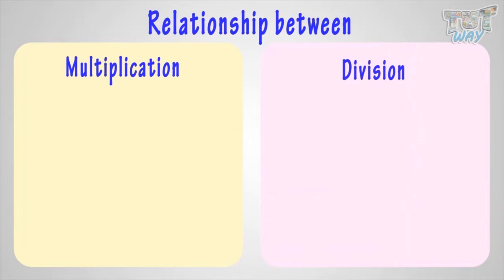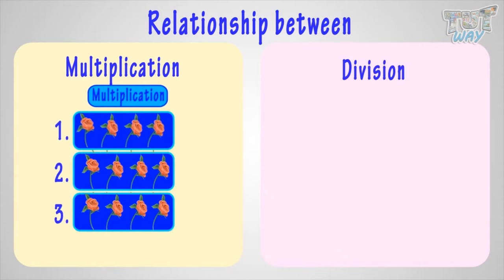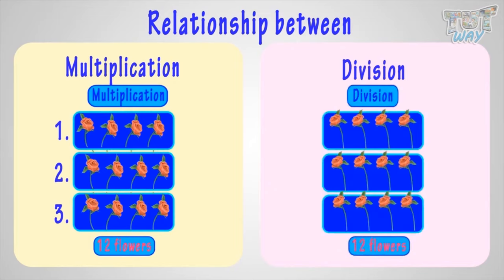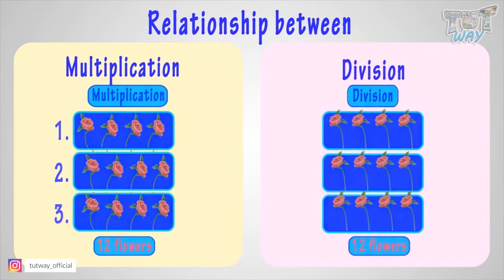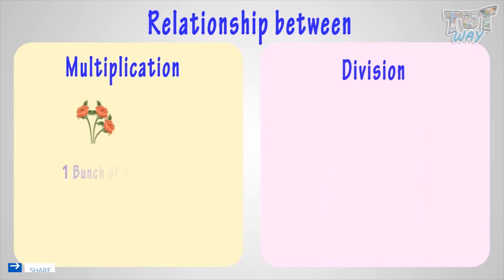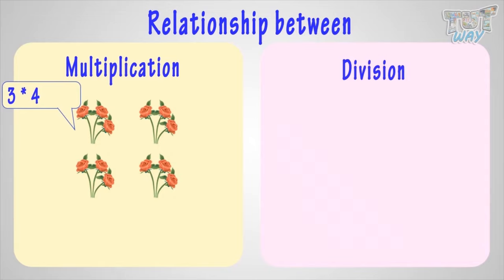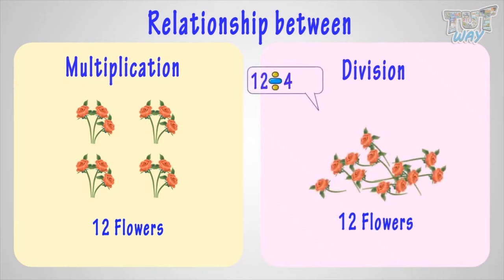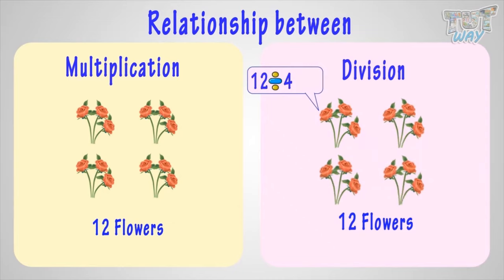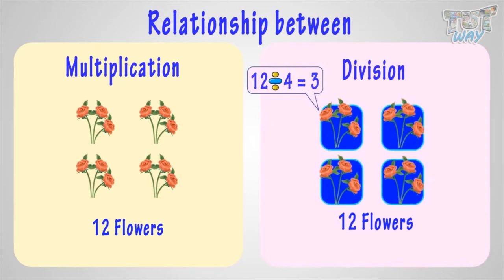Let's see how. Making three rows of four flowers each will make twelve flowers. And distributing twelve flowers in three rows gives us four flowers in each row. Can you see the relationship here? Let's try to understand better. You have a bunch of three flowers. If you multiply it with four, you get four bunches of three flowers each — total twelve flowers. If you have twelve flowers and divide them into four groups, you will get three flowers each in a group. So division is opposite of multiplication.